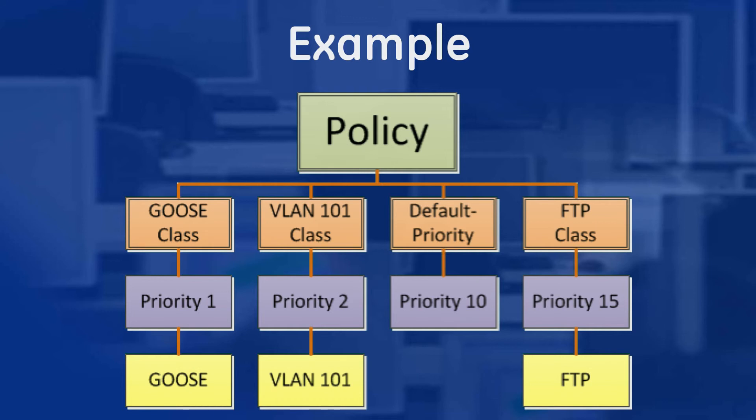This is where the fairness functionality comes in. We can apply a secondary fairness policy to the default traffic by configuring a new class. Note that you can apply the fairness policy to any of your other classes as well.